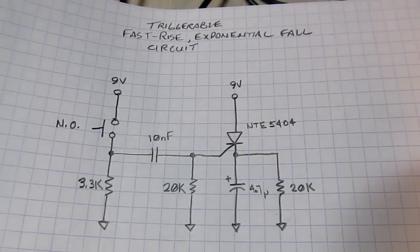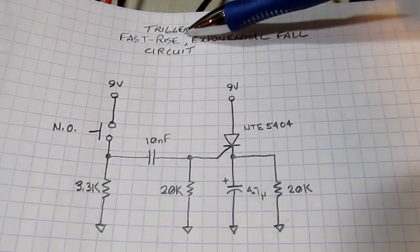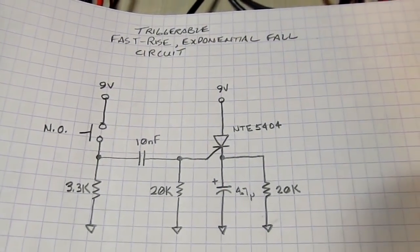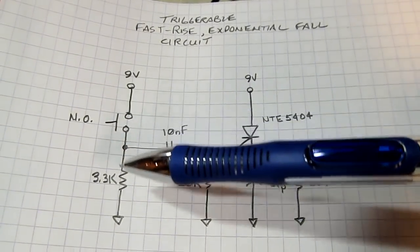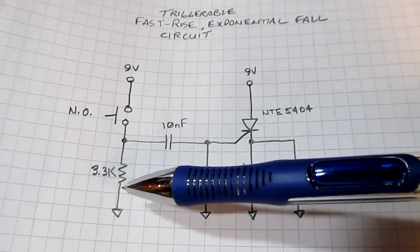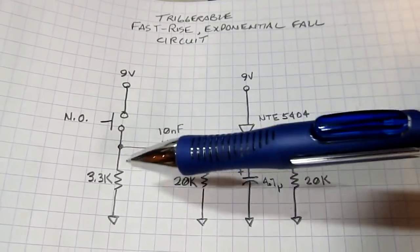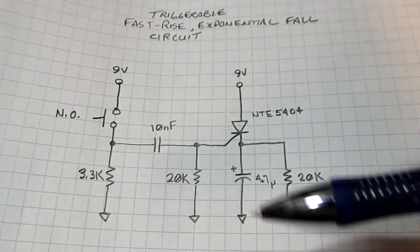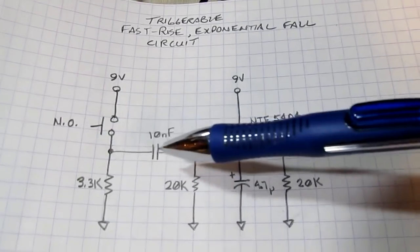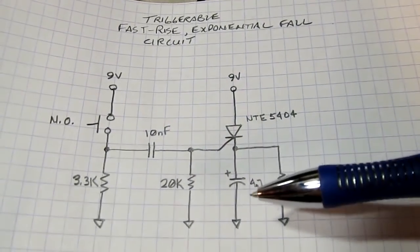So here's the circuit that creates the fast rise and exponential fall that was asked about on the forum. It's simply a normally open switch in series with a 3.3K resistor. So that pushing the switch will bring this node to the power supply and letting go will let it fall back down.